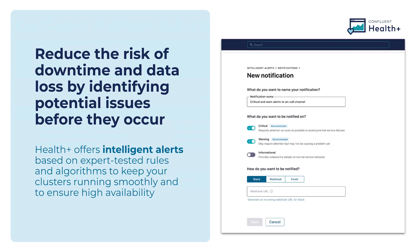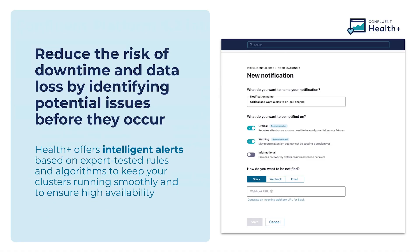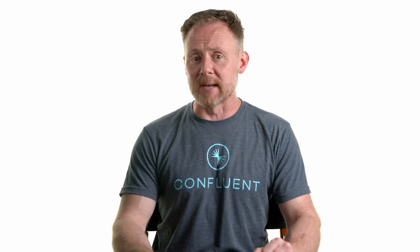Digging into intelligent alerts a little bit more: there are 10 total alerts right now as of this release, including validation of disk usage, unused topics, offline partitions, and other things. Product managers will add more alerts to this collection in the future, so count on this list to grow. You can also customize the types of notifications you receive — right now you're able to choose Slack, email, and webhook. HealthPlus also provides real-time and historical monitoring data, aggregated and made visible to you for easy troubleshooting and trend analysis.